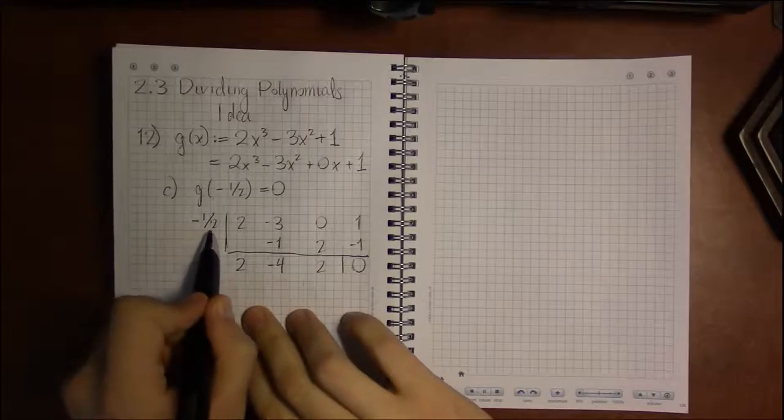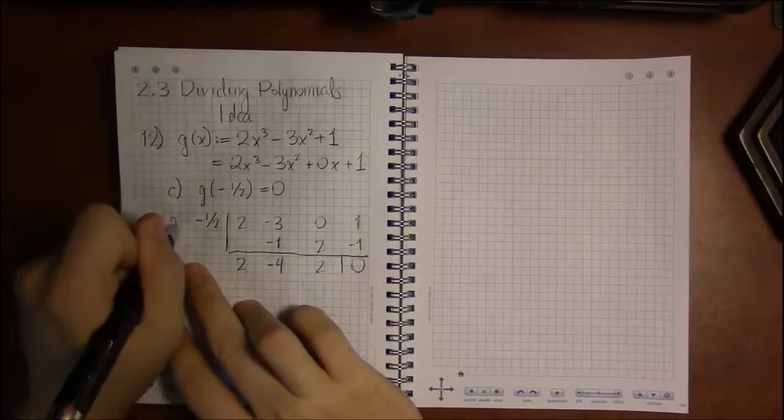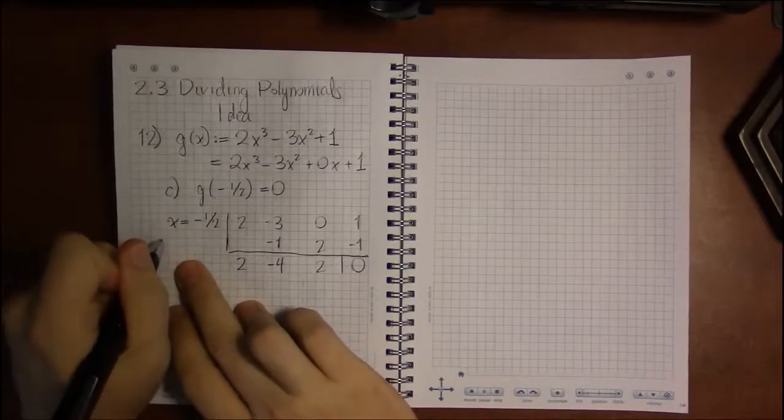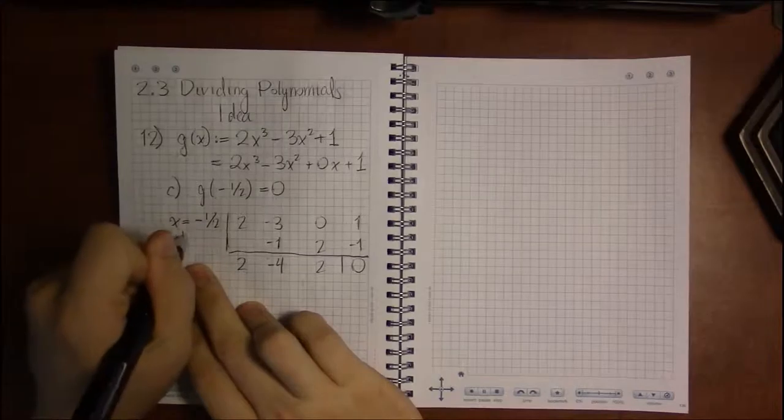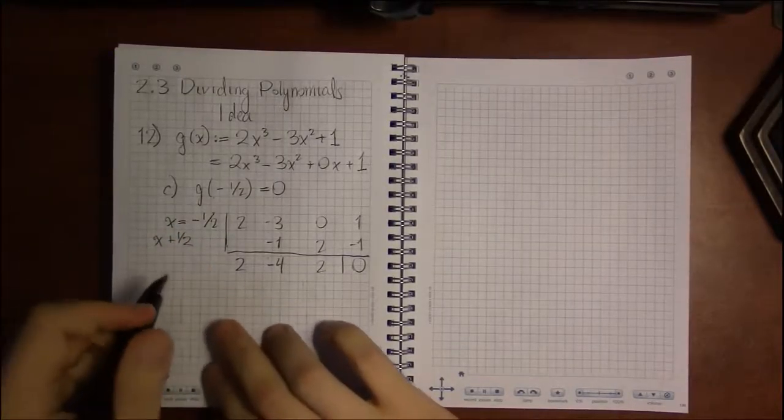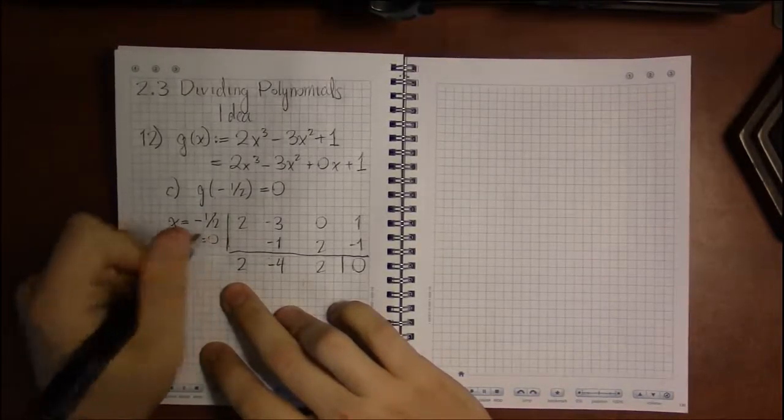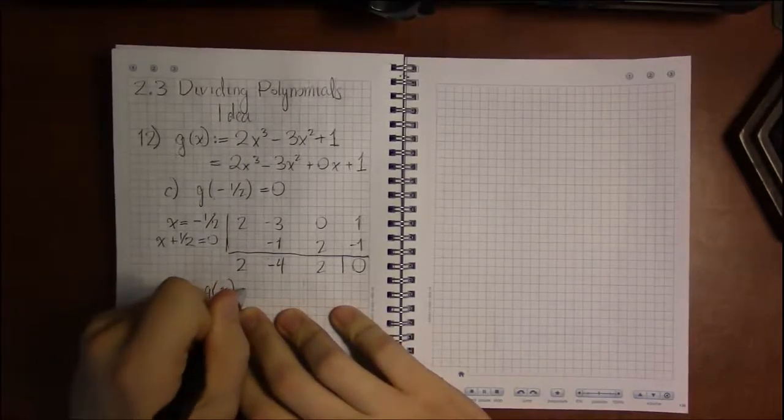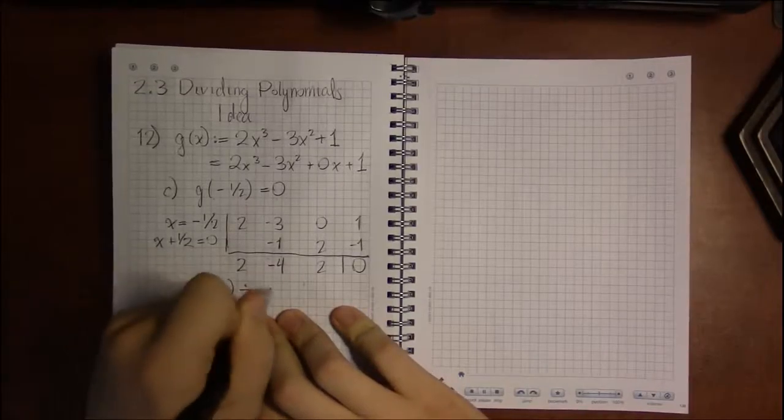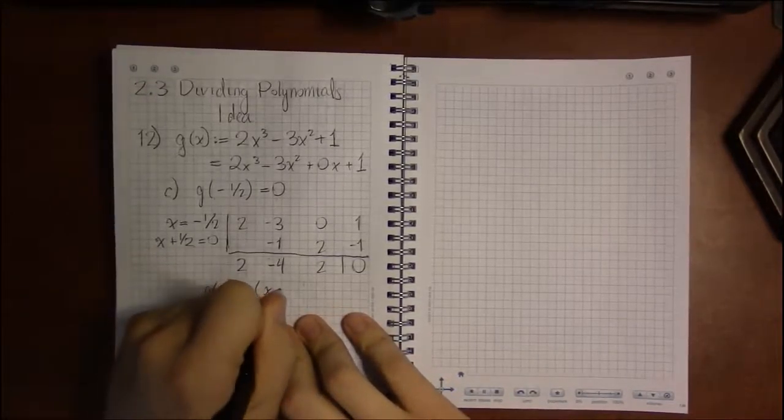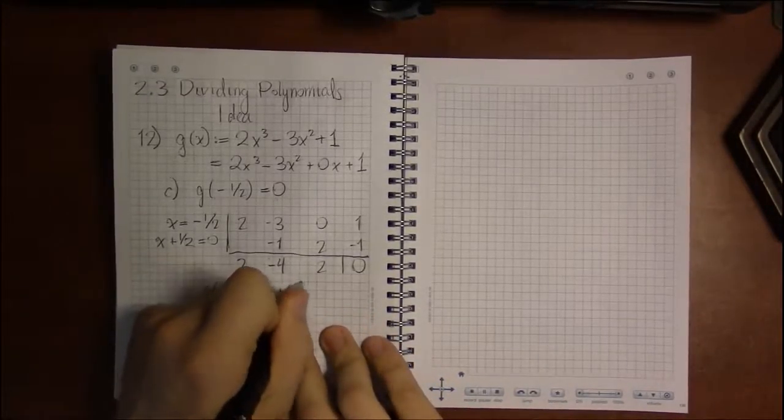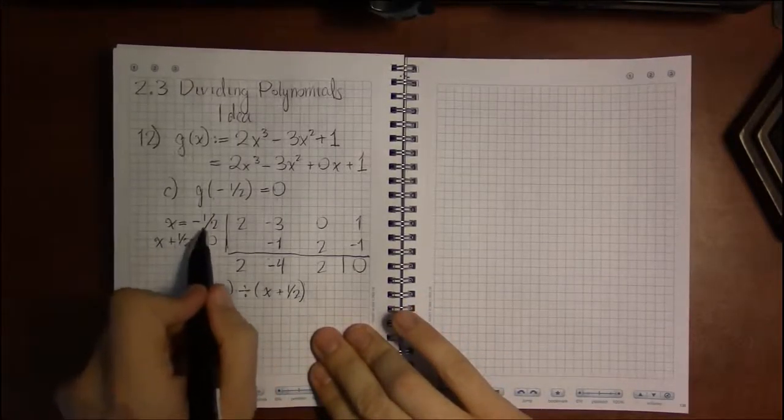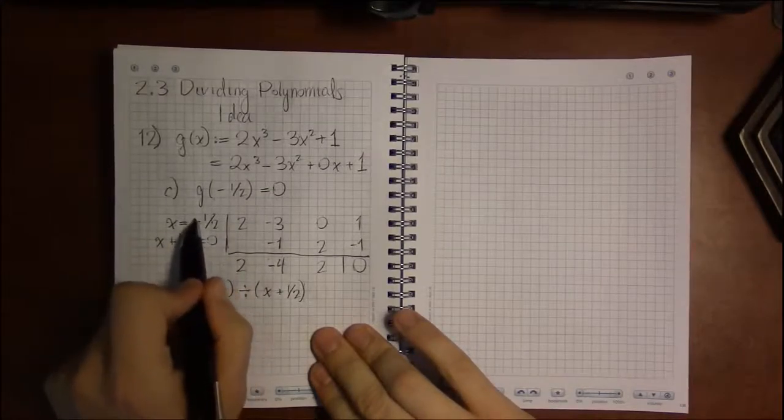But this means that if x equals minus 1 half makes g 0, then the other way we could have thought about this was saying that, let's divide g of x by x plus 1 half. And if we do that, we would have to set this equal to 0 and solve, which gets us back to our minus 1 half.